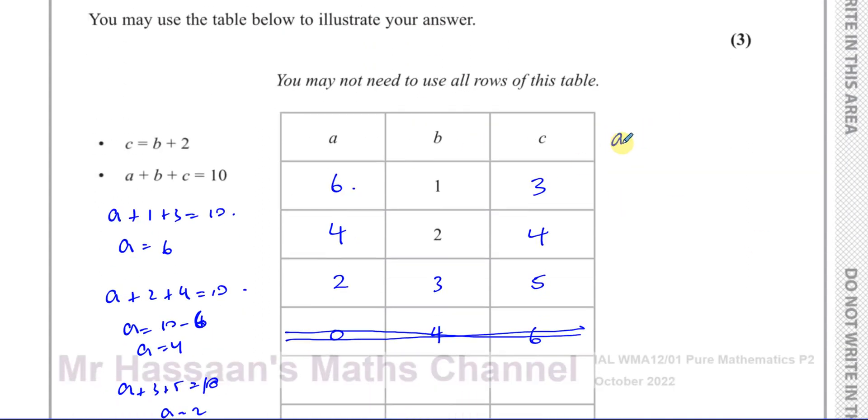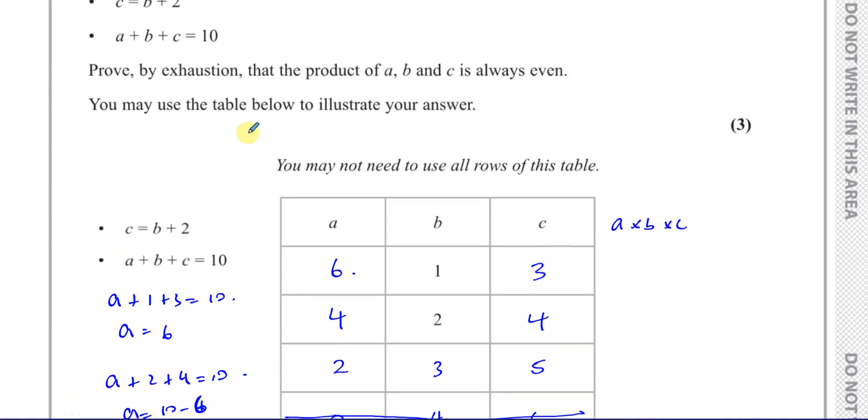We have A times B times C. The product, it's one of the things that I mentioned in the examiner's report, that a lot of people, they took the product as the sum. No, the product is when you multiply them together. So we have to know the meaning of these words. So product means when you multiply the numbers together.